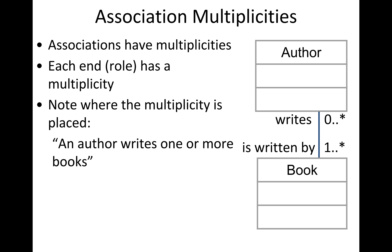You can also document how many of each class participate in the association using the multiplicity annotation. You might say one author can write many books. On one side you might have zero or more books, and on the other you might have one or more authors. One author can write many books, or one book can be written by many authors. The multiplicity tells us how many instances of each class participate in an association.